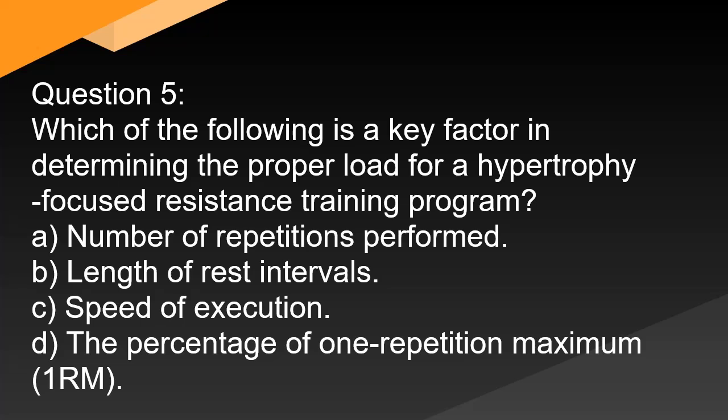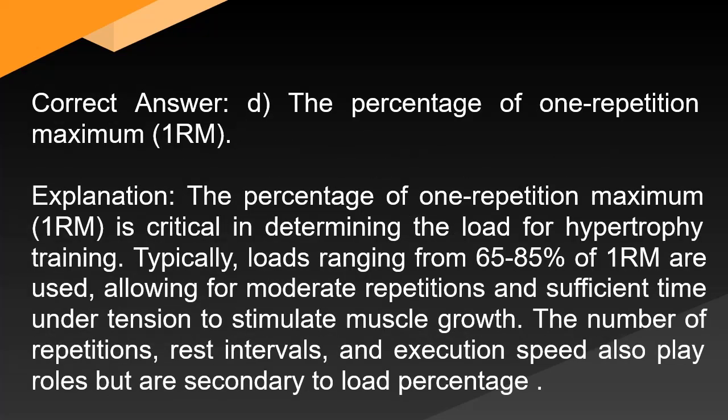Question 5: Which of the following is a key factor in determining the proper load for a hypertrophy-focused training program? A. Number of repetitions performed. B. Length of rest intervals. C. Speed of execution. D. The percentage of one repetition maximum (1RM). Correct answer: D. The percentage of 1RM. The percentage of 1RM is critical in determining the load for hypertrophy training. Typically, loads ranging from 65–85% of 1RM are used, allowing for moderate repetitions and sufficient time under tension to stimulate muscle growth. Repetitions, rest intervals, and execution speed also play roles but are secondary to load percentage.